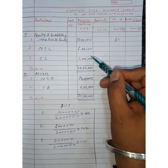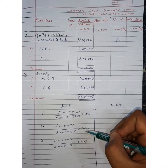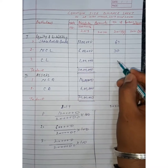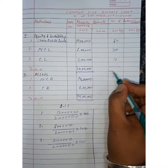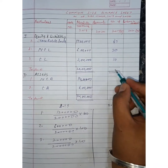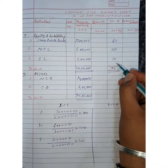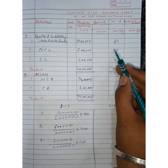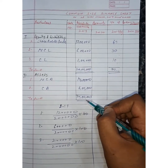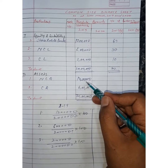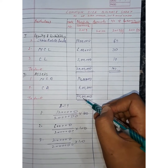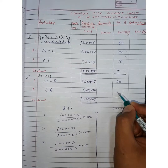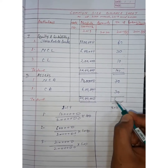Percentage आ जाएगी 60%। Same as 6 lakh by 20 lakh into 100 — 30%; 2 lakh by 20 lakh into 100 — 10%; and 20 lakh by 20 lakh — 100%। इन percentages का total भी 100 ही बनना चाहिए — अगर नहीं बन रहा, that means आपने कोई calculation mistake की हुई है। Same method asset side पर: 14 lakh by 20 lakh into 100 — 70%; 6 lakh by 20 lakh into 100 — 30%; total 100%।